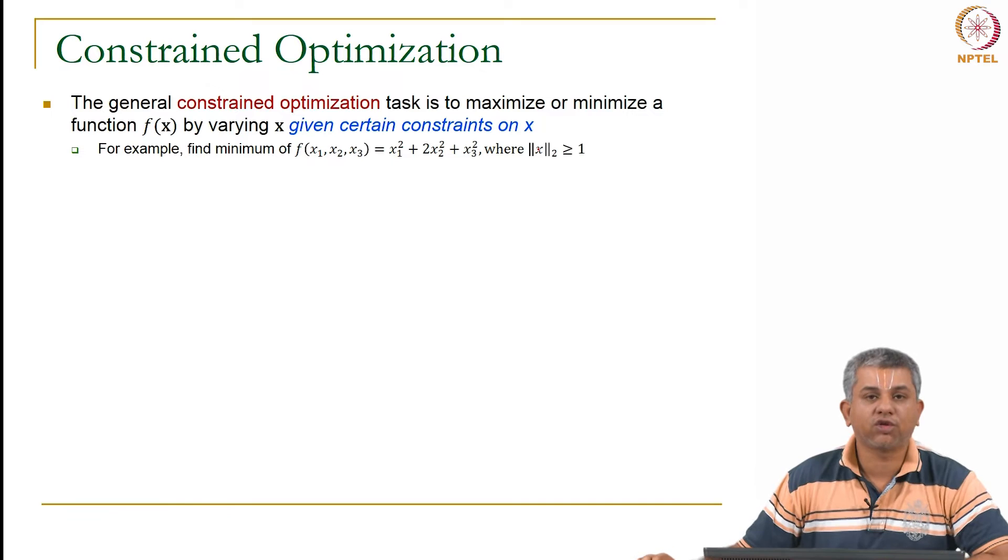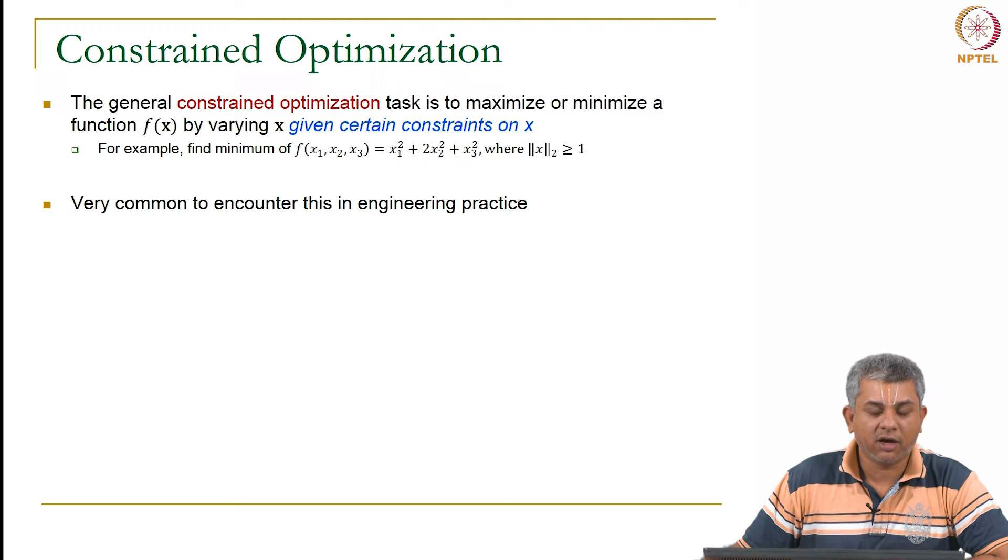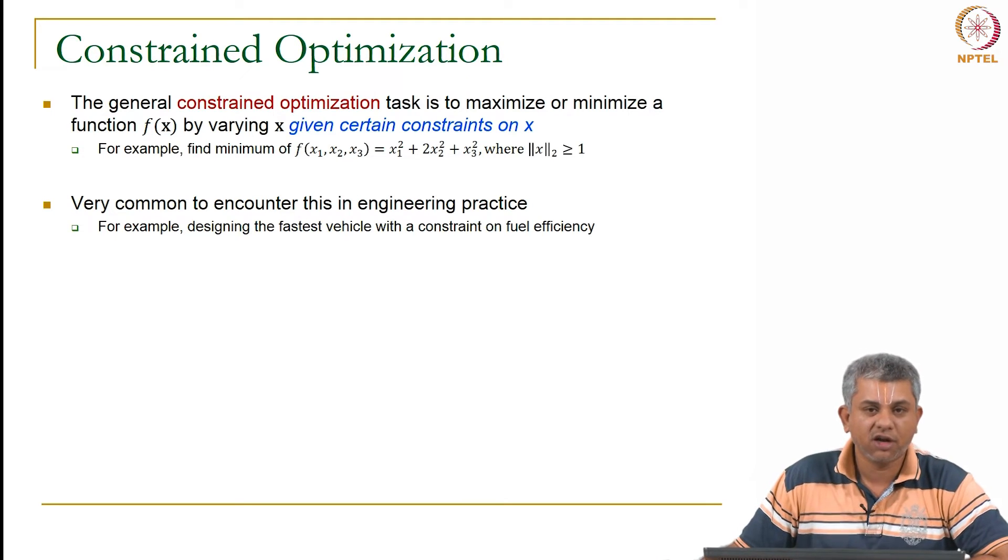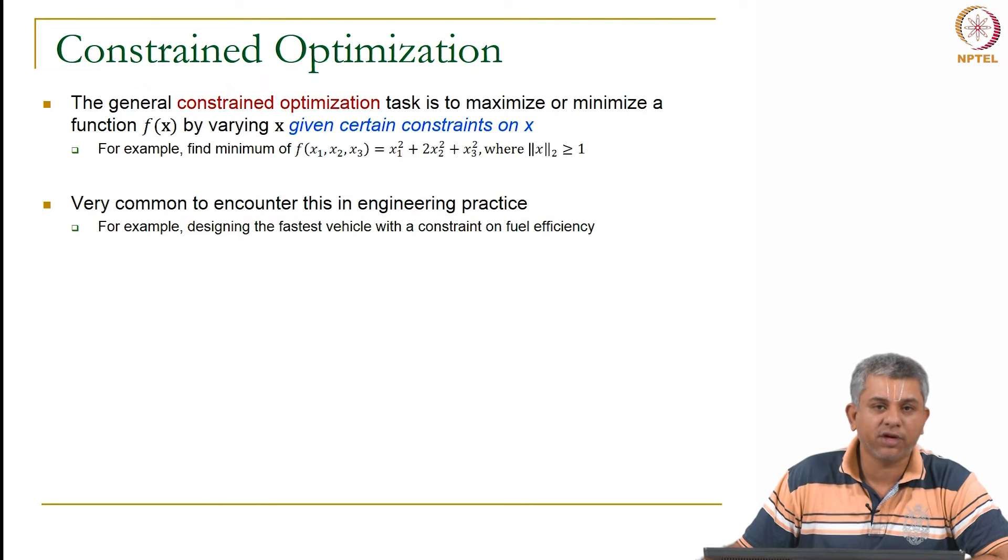We could also give engineering examples. A theoretical example would be something like you want to design a vehicle which goes really fast but you also want to give a constraint on fuel efficiency. So you do not have unlimited fuel.